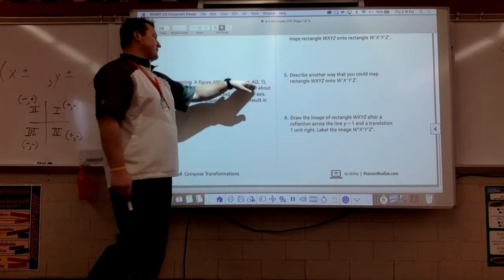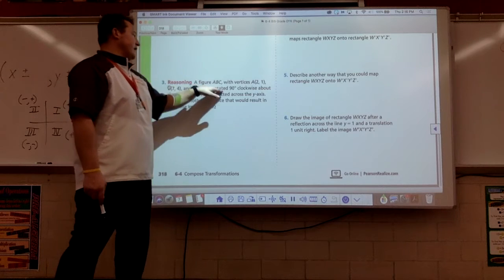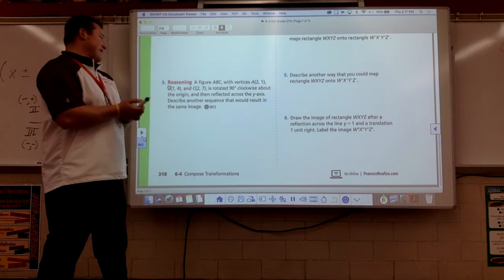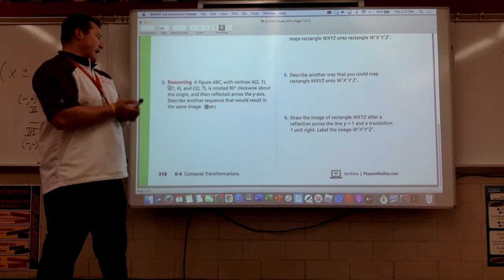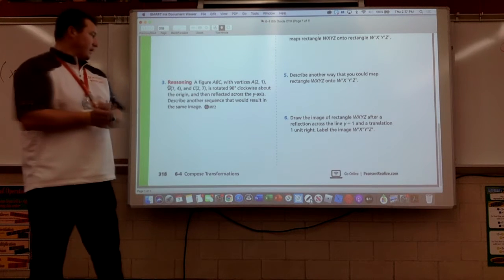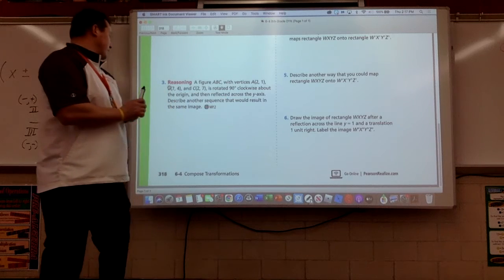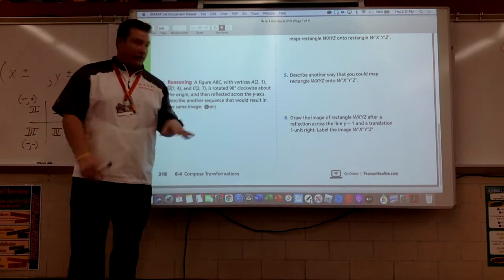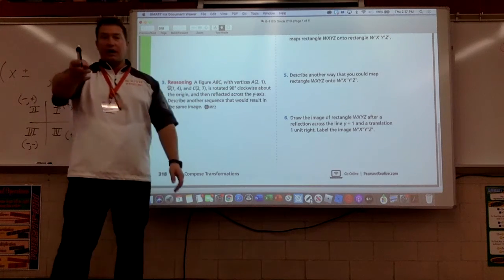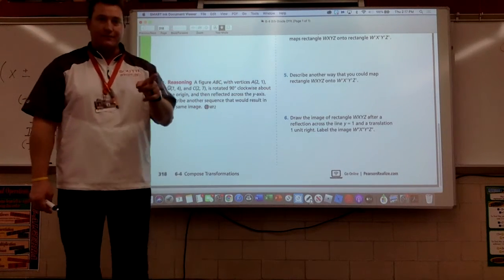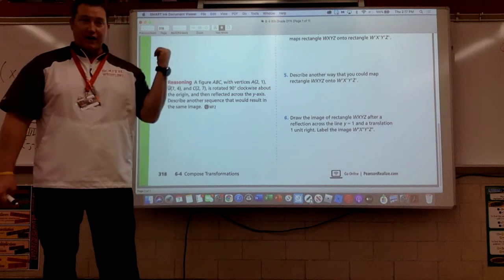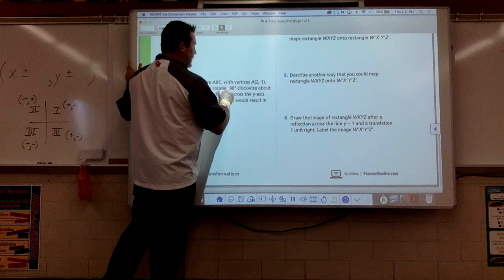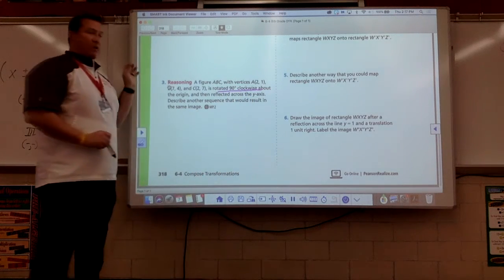A figure ABC with vertices is rotated 90 degrees clockwise about the origin and then reflected across the y-axis. Describe another sequence that would result in the same image. I can't stand questions like this, but I'll give you the secret. You ready for the secret?